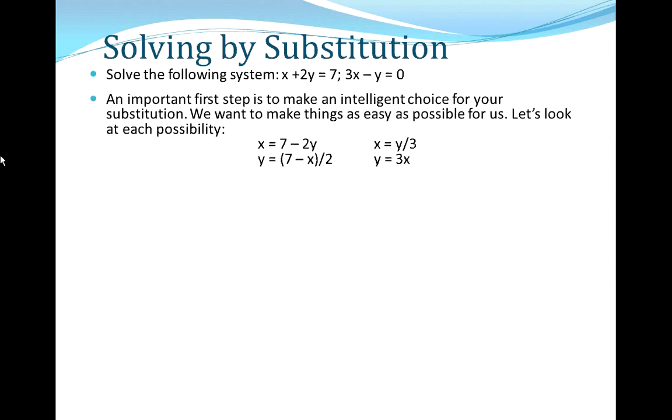So I have listed here four choices: x equals 7 minus 2y, y equals (7 minus x)/2, x equals y/3, and y equals 3x. So each of these is the two equations at the top solved for each of the variables. Now we want to choose the simplest of these four equations.